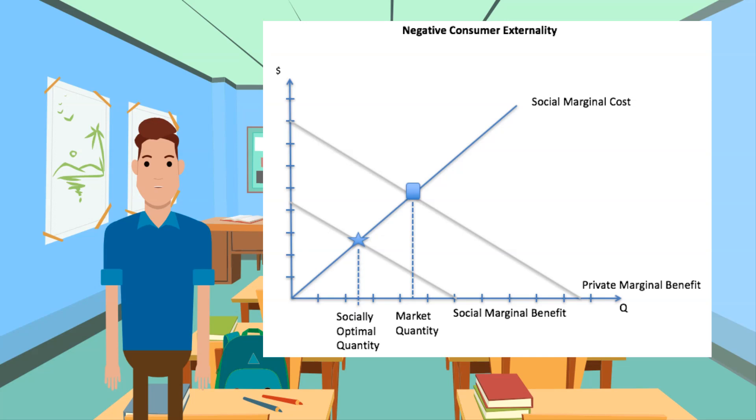Government policies proposed to preserve future antibiotic effectiveness could include educational campaigns, regulation, and patents.